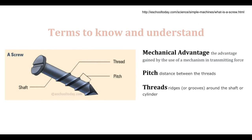Let's talk about terms that we need to know and understand about the screw. First, let's talk about mechanical advantage — the advantage gained by the use of a mechanism in transmitting force. A screw has something called a pitch. The pitch is the distance between the threads. The thread is the ridge or groove along the shaft or cylinder.